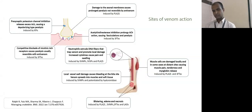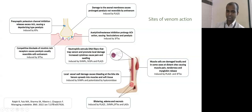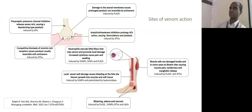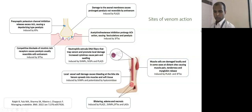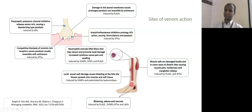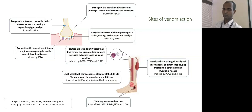In certain snake species, especially Indian Cobra, additional local changes include blistering and necrosis. Apart from phospholipases and SVMPs, three-finger toxins and L-amino acid oxidases are involved in causing severe local necrosis, commonly seen in Indian Cobra. Locally, venom can also cause significant muscle damage, muscle pain, tenderness, and significant rhabdomyolysis, leading to elevated myoglobin and CPK levels. This is again induced by phospholipases and three-finger toxins.